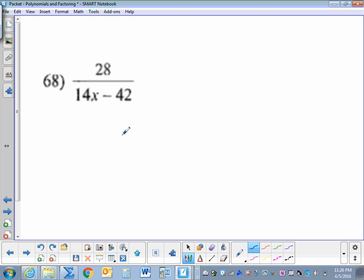Let's go ahead and divide this polynomial. So 28 divided by, let's factor this: 14 times x minus 3. Now I can eliminate top to bottom. From 28, it goes into 14 two times. So 2 over x minus 3.